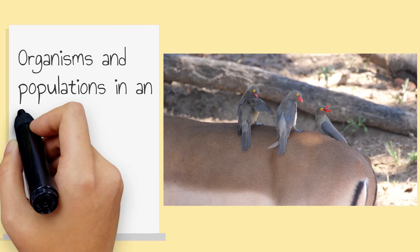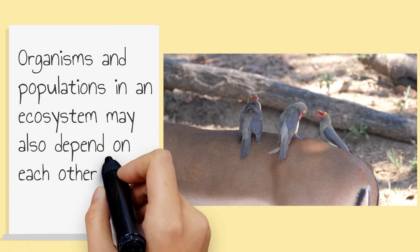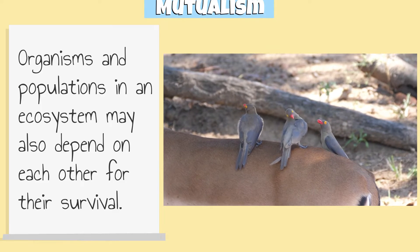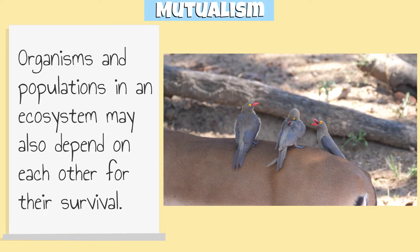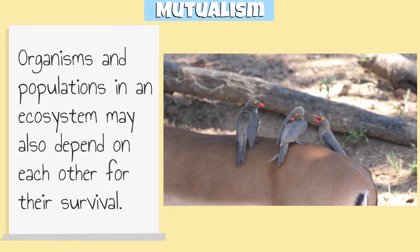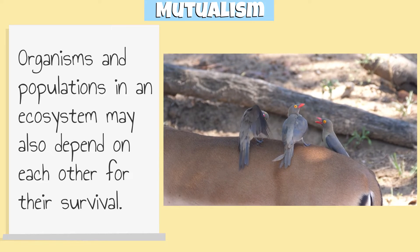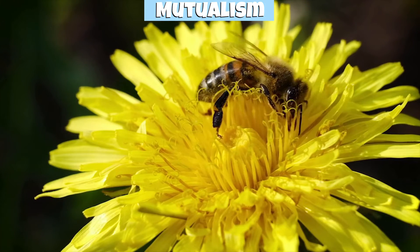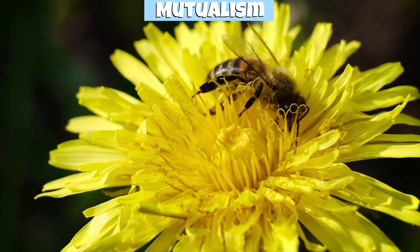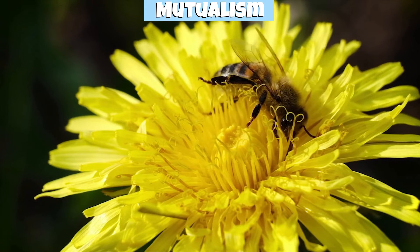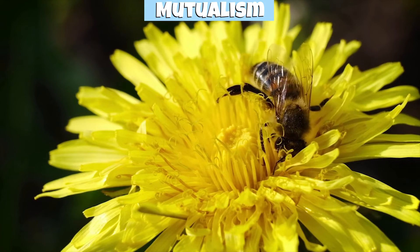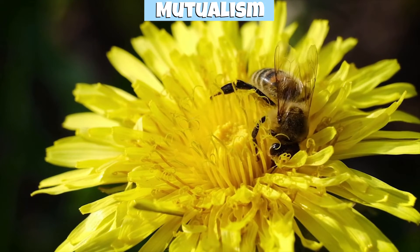Organisms and populations in an ecosystem may also depend on each other for their survival. This phenomenon is known as mutualism. In mutualism, two or more species have a symbiotic relationship where they both benefit from each other. For example, a plant may rely on a particular species of insects to pollinate its flowers, and the insect may rely on the plant for food. Both organisms benefit from this relationship and depend on each other for survival.